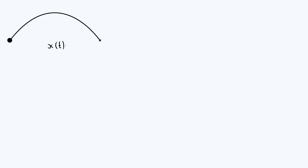In other words, we're going to find what is the x coordinate as a function of time and what is the y coordinate as a function of time. When we've done that, we'll combine those results together to find the Cartesian equation of the trajectory — what is the y coordinate as a function of the x coordinate. And we will use that result to find an expression for the range of the projectile: how far it actually travels in total in the horizontal direction.